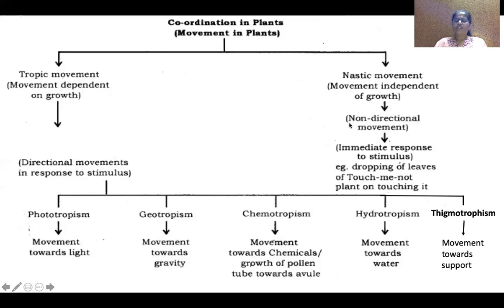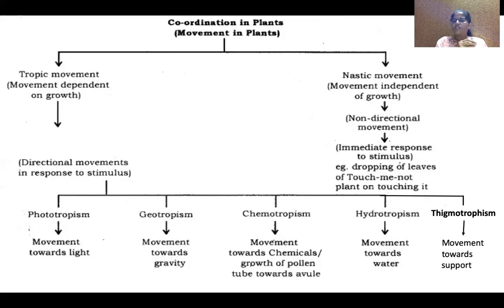A simple example of nastic movement is the touch-me-not plant. When you touch the plant, it closes its leaves. This response is just a matter of water movement in the leaves — the leaf shape changes and the leaf will droop and close. Once water re-enters the leaves, it automatically returns to normal. This is not associated with growth, so it is called nastic movement.